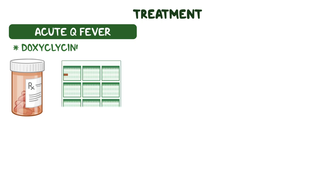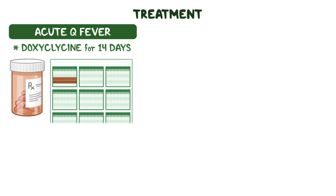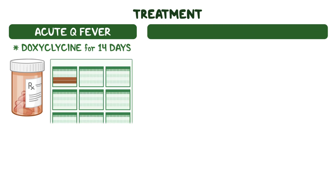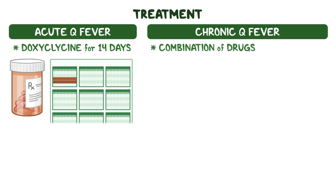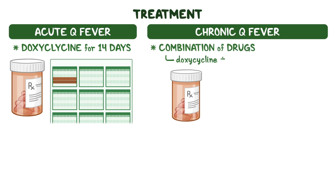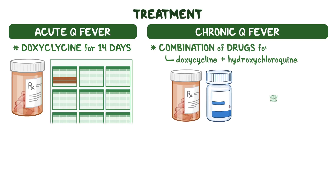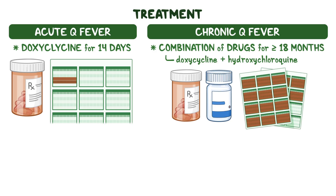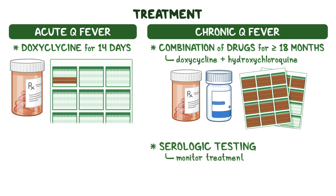Treatment of acute Q fever is with doxycycline for 14 days for most patients. Chronic Q fever requires longer-term management with a combination of drugs, such as doxycycline and hydroxychloroquine, for at least 18 months, as well as serologic testing to monitor treatment response.